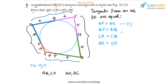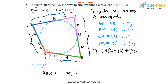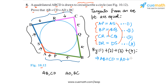Let's call these equalities 1, 2, 3, and 4, and now simply add them. By 1 plus 2 plus 3 plus 4: on the left side, AP and BP give us AB, and CR and DR give us CD, so we get AB plus CD. On the right side, AS and DS give us AD, and BQ and CQ give us BC, so we get AD plus BC.